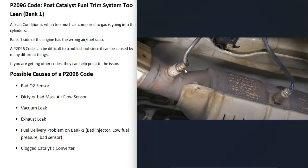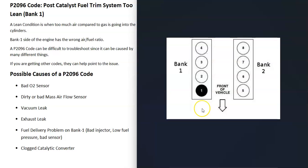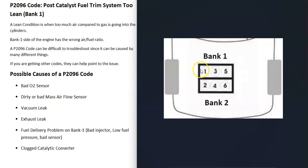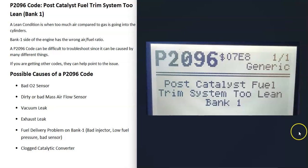If you have a V6 or V8 engine, bank one is always the side of the engine with the number one cylinder. Find the number one cylinder and that side is bank one; the opposite side is bank two.